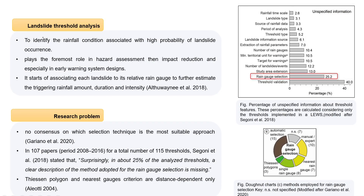In short, as discussed in different courses about landslide threshold analysis, the threshold for landslides means identifying the rainfall condition associated with a high probability of landslide occurrence. It plays the foremost role in landslide assessment research, especially when developing an early warning system. The goal is to associate each landslide to its relative rain gauge, estimating the triggering rainfall amount, duration, and intensity that might predict future landslides.